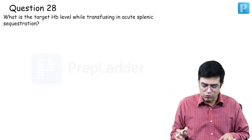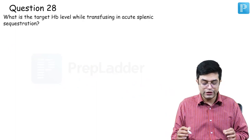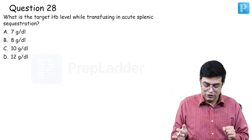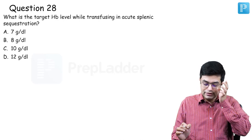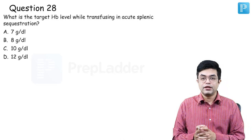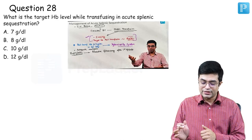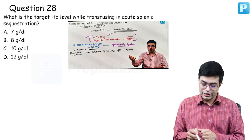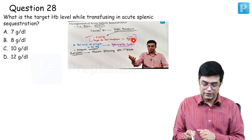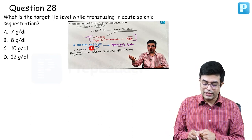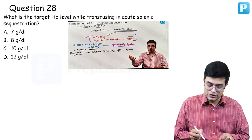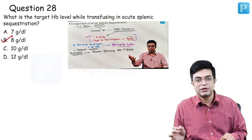Question number twenty-eight: target hemoglobin level while transfusing in acute splenic sequestration. Options: 7, 8, 10, or 12 g/dL. Target Hb post-transfusion is around 8 g/dL — clearly mentioned in all standard textbooks. If post-transfusion value becomes 10 or more, it increases the risk of hyperviscosity syndrome and recurrence. Answer: B — 8 grams per deciliter.